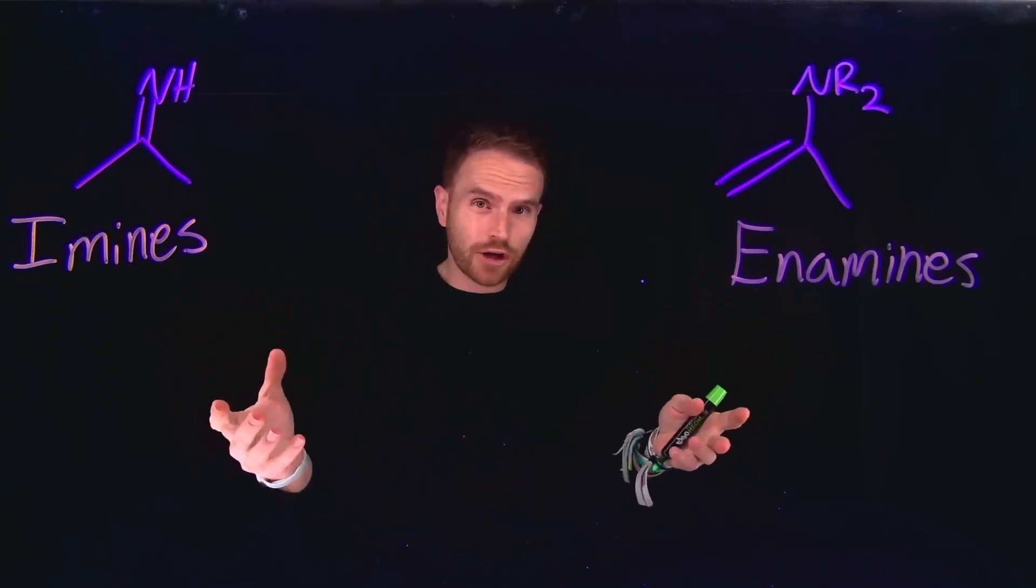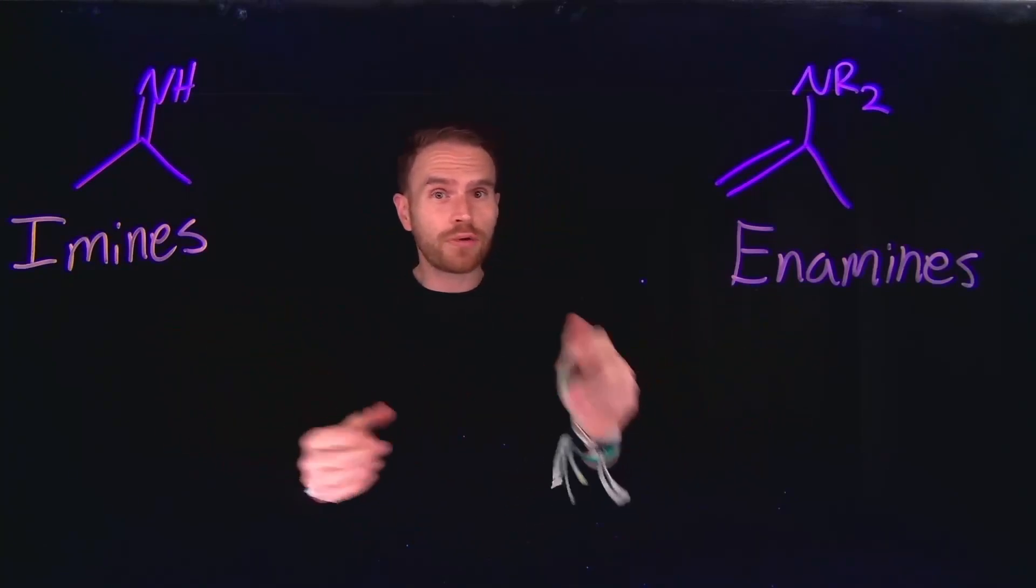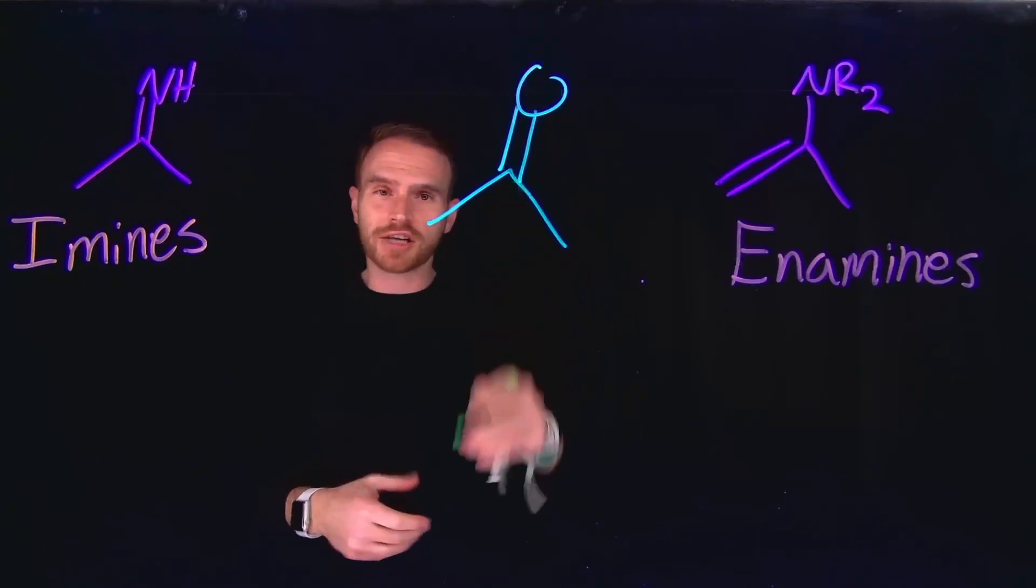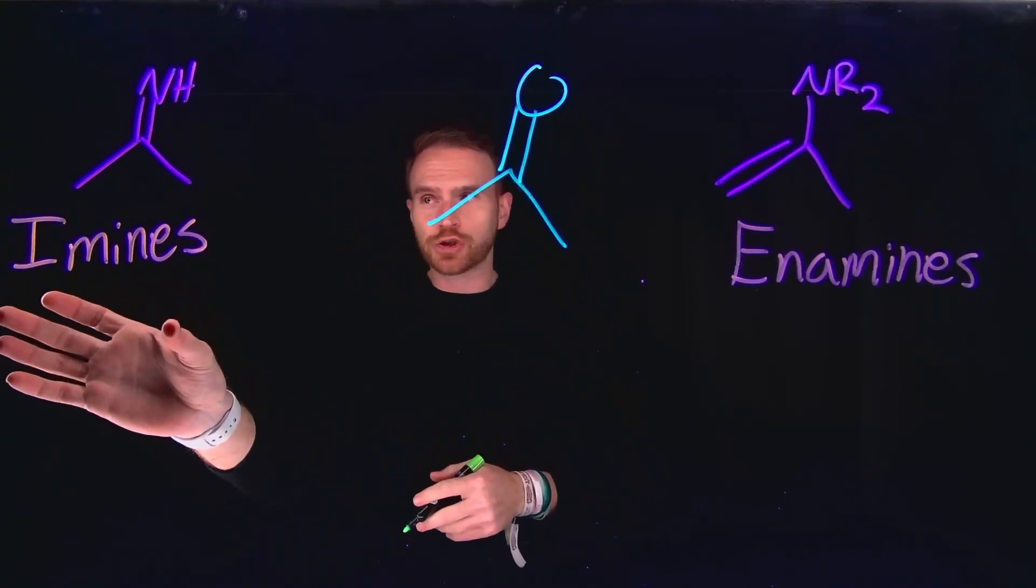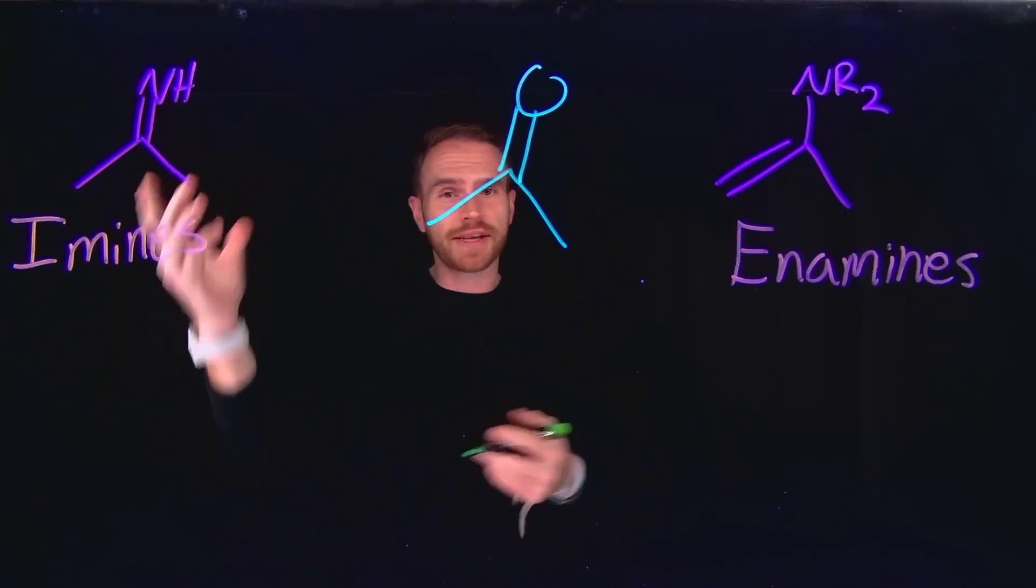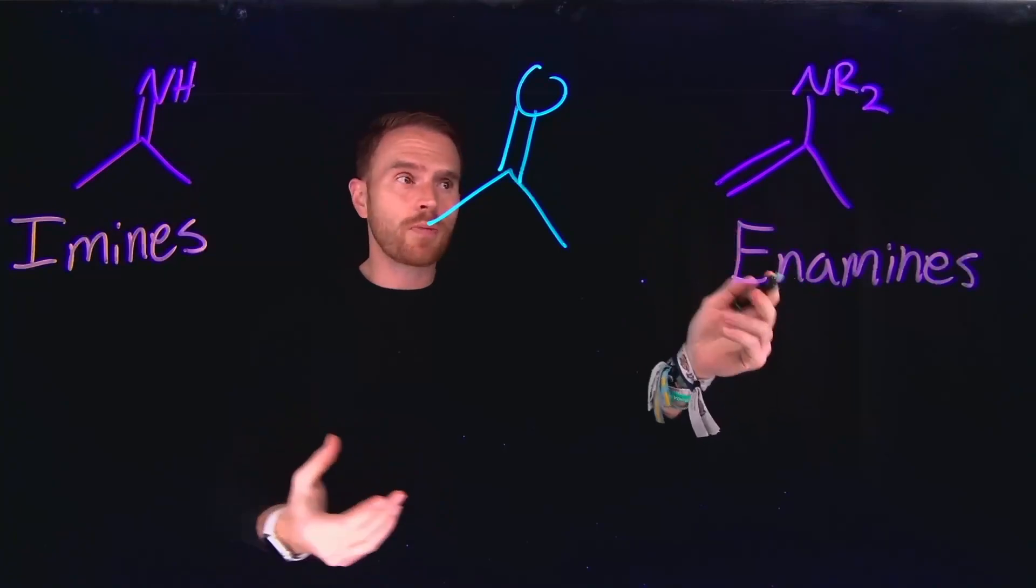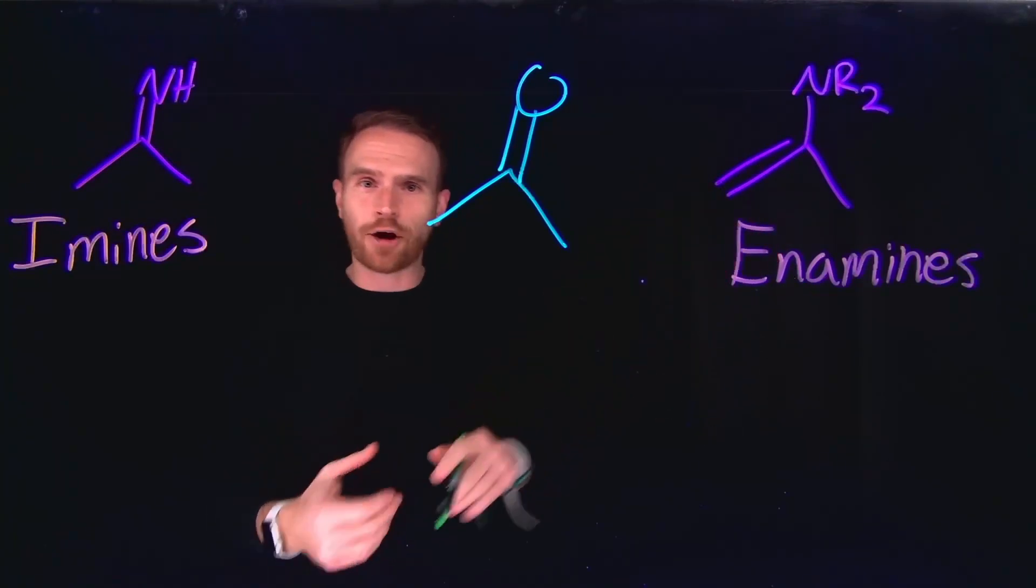Imines and enamines are pivotal functional groups in organic chemistry. They are both derived from carbonyl compounds, which is where you have a carbon-to-oxygen double bond. In the imine structure, instead, you have a carbon-to-nitrogen double bond. And for enamines, you have a carbon-to-nitrogen single bond, but that carbon is an alkene.